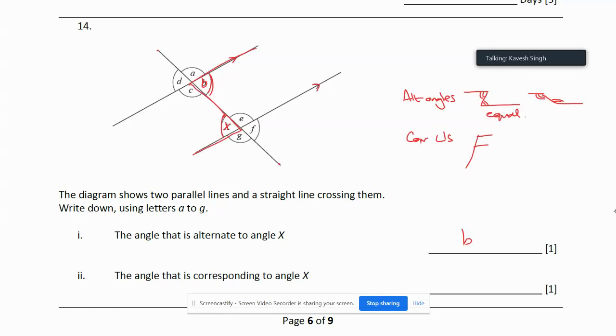When it comes to corresponding angles we have to remember that there's some kind of F shape. So you can have those angles, it's almost like a shelf. Sometimes it can be upside down, you can have the bottom of the shelf.